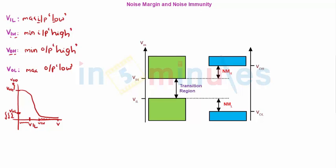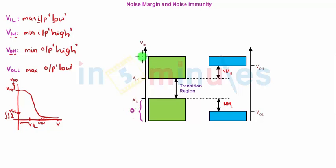Here I have shown on my screen the directions of my noise margin. Let's quickly understand this. This is my VIH, this is my VIL — this is the input scale and this is the output scale where this is VOUT and this is VOH. When my input is in this range it will be interpreted as logic 0, and when my input is in this range it will be interpreted as logic 1.